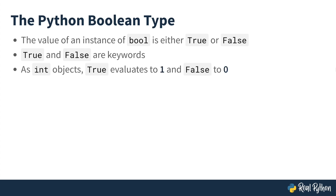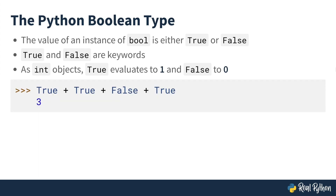When typecast into integer objects, true evaluates to one and false evaluates to zero. Since the Boolean class is a subclass of the integer class, you can do things like arithmetic with true and false. This may not seem all that useful, but we'll look at an example where you may actually want to take advantage of this. Let's take a look at some examples.